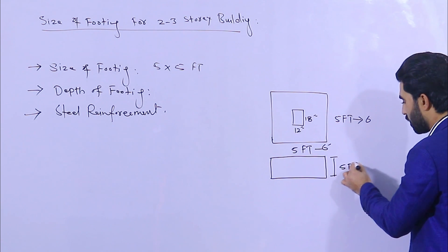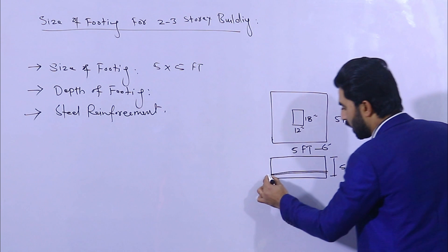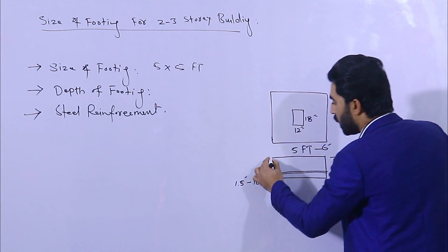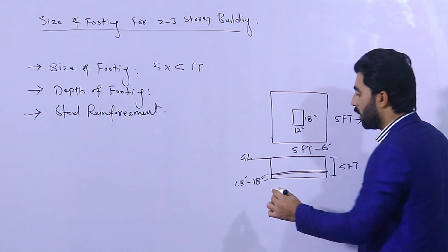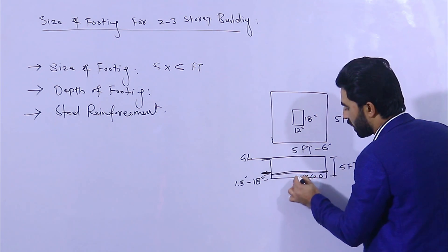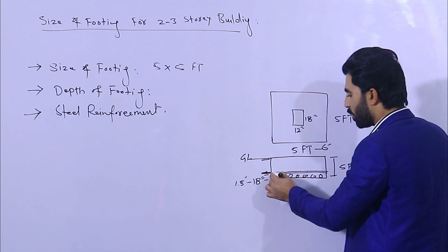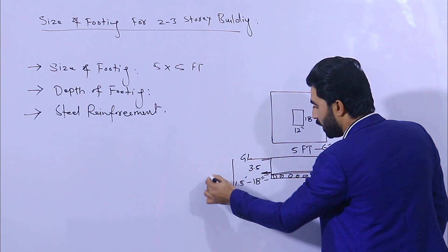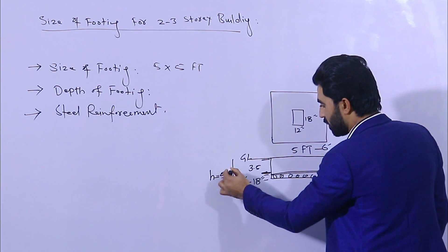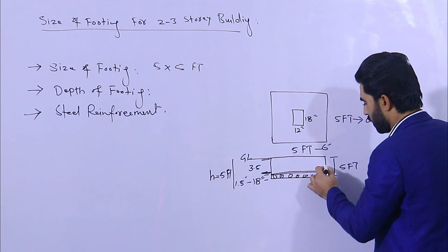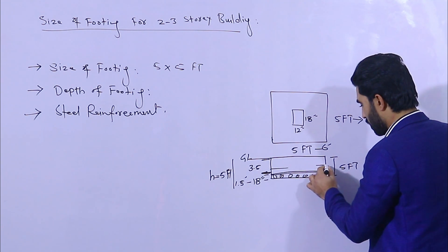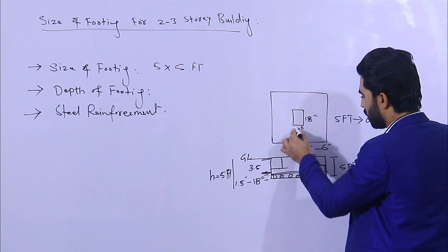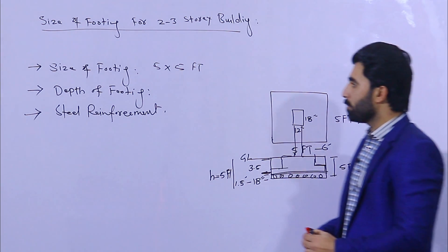The depth should also not be less than five feet. The bed level should be 18 inches — that is 1.5 feet — from the ground level (GL). After the bed level, we are providing steel reinforcement. It should be 18 inches with concrete cover, and we will provide double mesh in the case of three stories. Then you go three and a half feet, so the total depth equals five feet to the ground level.